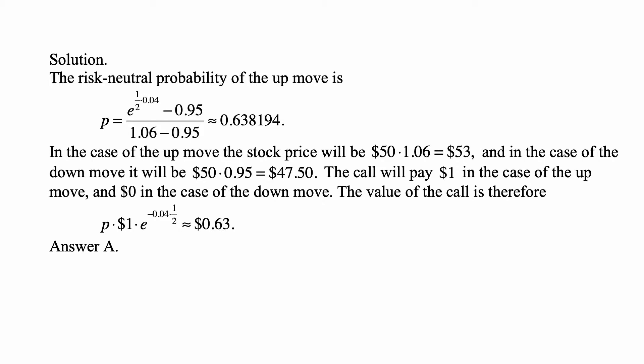That's risk-free accumulation of $1 over six months, minus .95, the value of $1 invested if the stock goes down, over 1.06 minus .95, which is the difference of the up value minus the down value of the stock. That's approximately .638194.